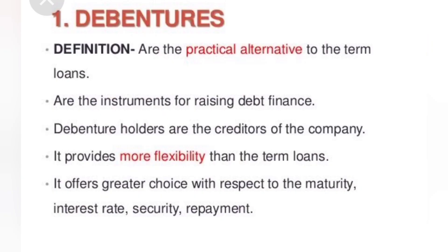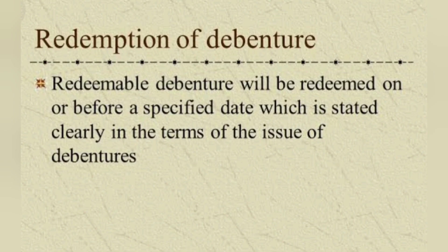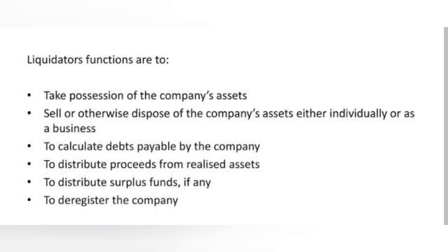What is meant by debentures? Debentures are the practical alternative to the term loan. This is an instrument of debt finance. The debenture holder is the creditor of the company. It has more flexibility, the holder is eligible for interest, and it offers the greatest choice with respect to maturity. Debentures will be redeemed on or before a specified date which is stated clearly in the terms of the issue. Similar to preference shares, after a given period of time the debenture can be got back.